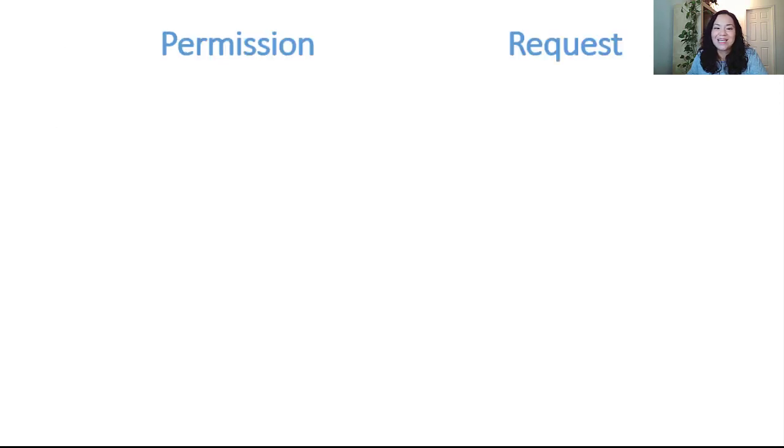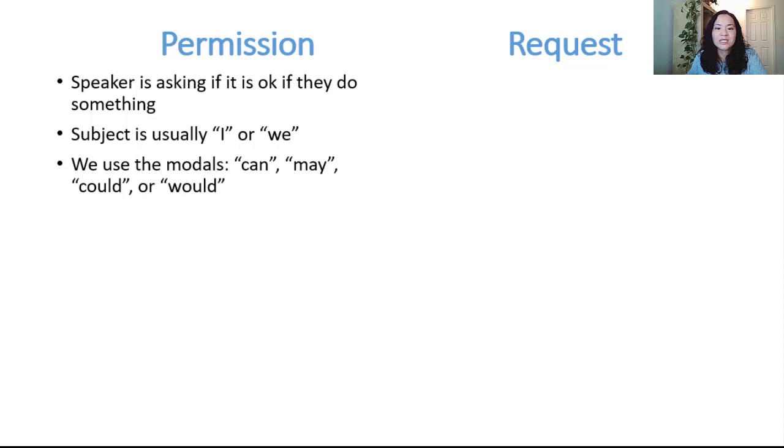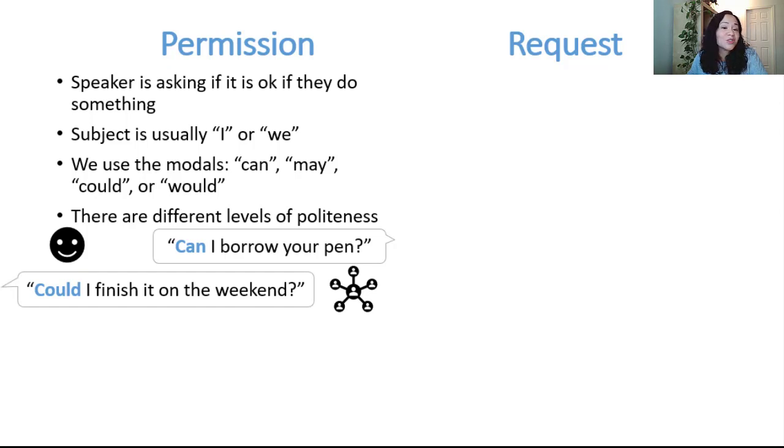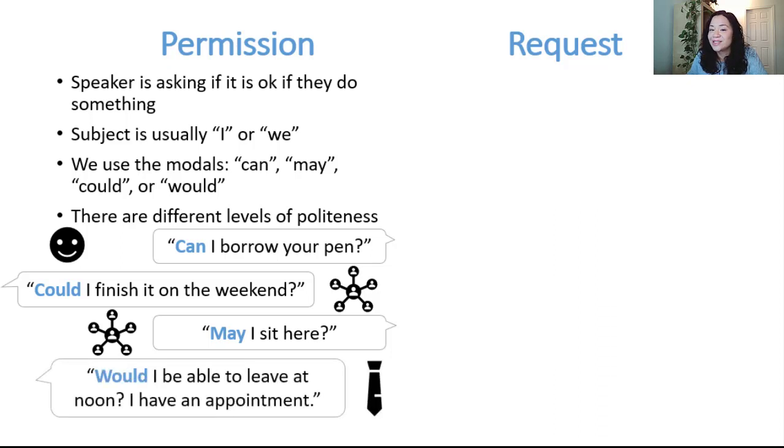Permission and request. A very important part of being polite is understanding the different levels of formality and politeness when asking permission or making requests in the workplace. Permission means that the speaker is asking if it is okay if they do something, so the subject is usually I or we. For asking permission, we use the modals can, may, could, would, and there are different levels of politeness. Can I borrow your pen to a friend or fellow co-worker? Could I finish it on the weekend to a fellow co-worker or a supervisor? May I sit here to a supervisor or stranger? Would I be able to leave at noon, I have an appointment, to a supervisor.